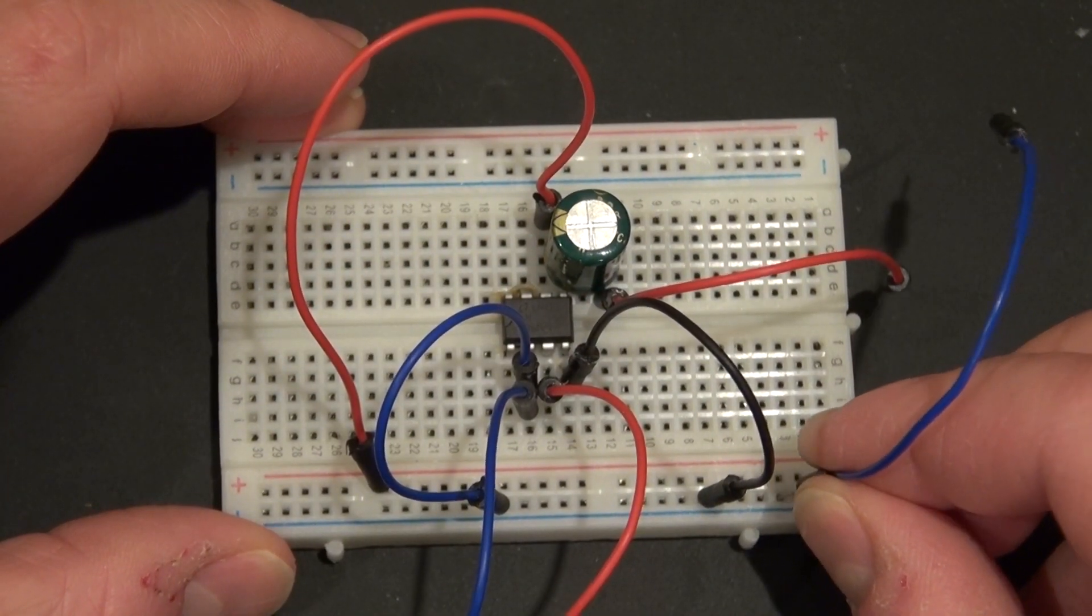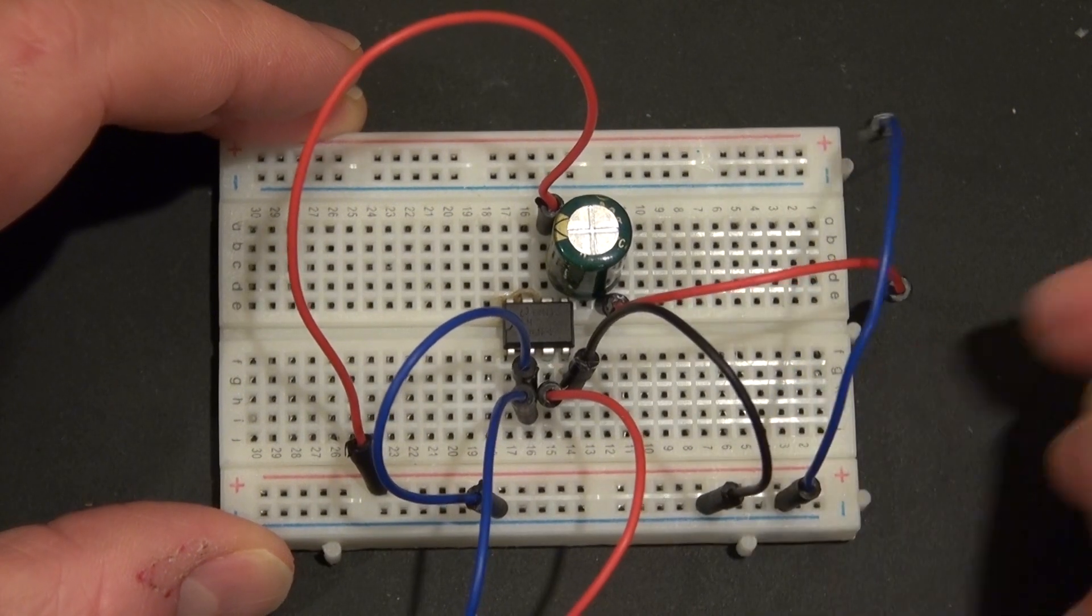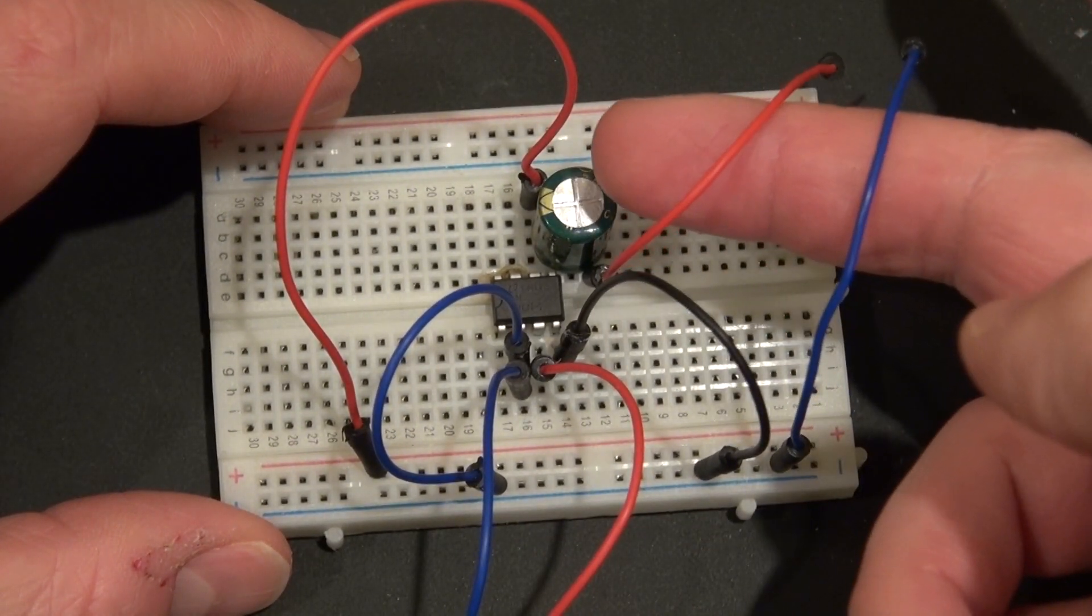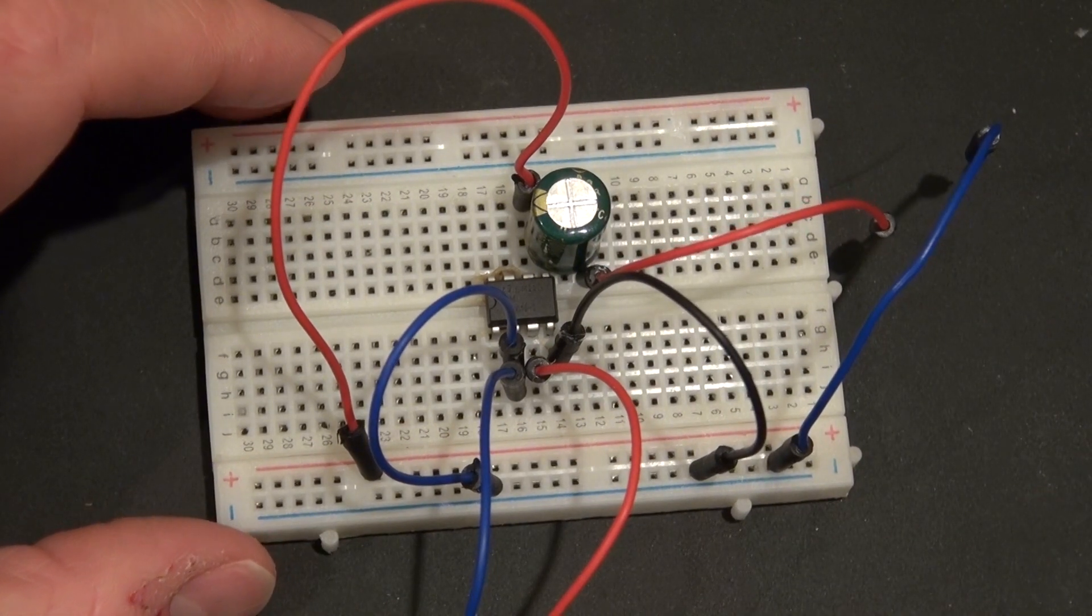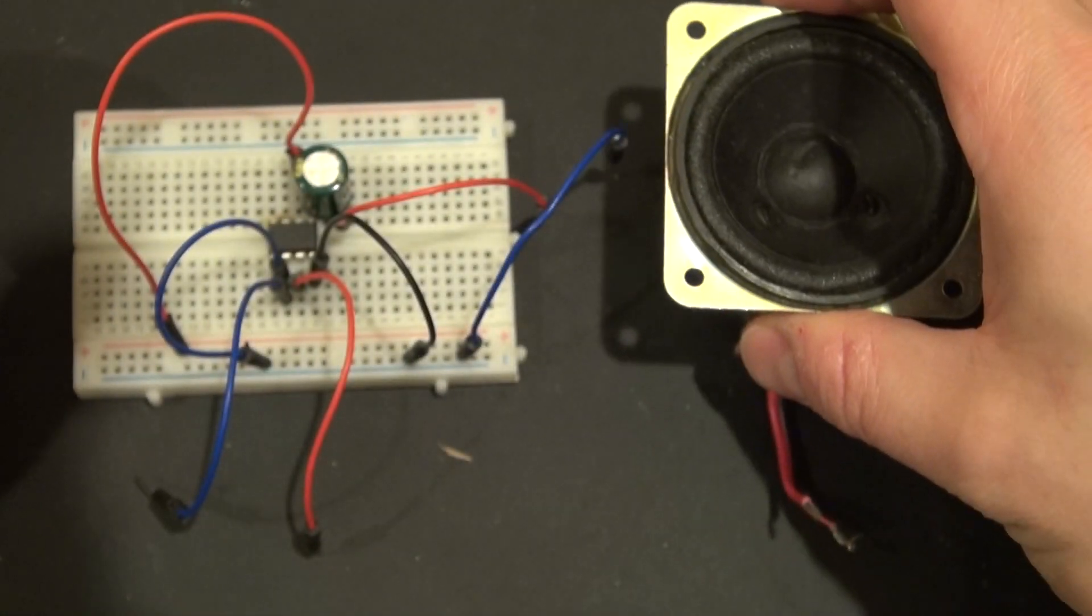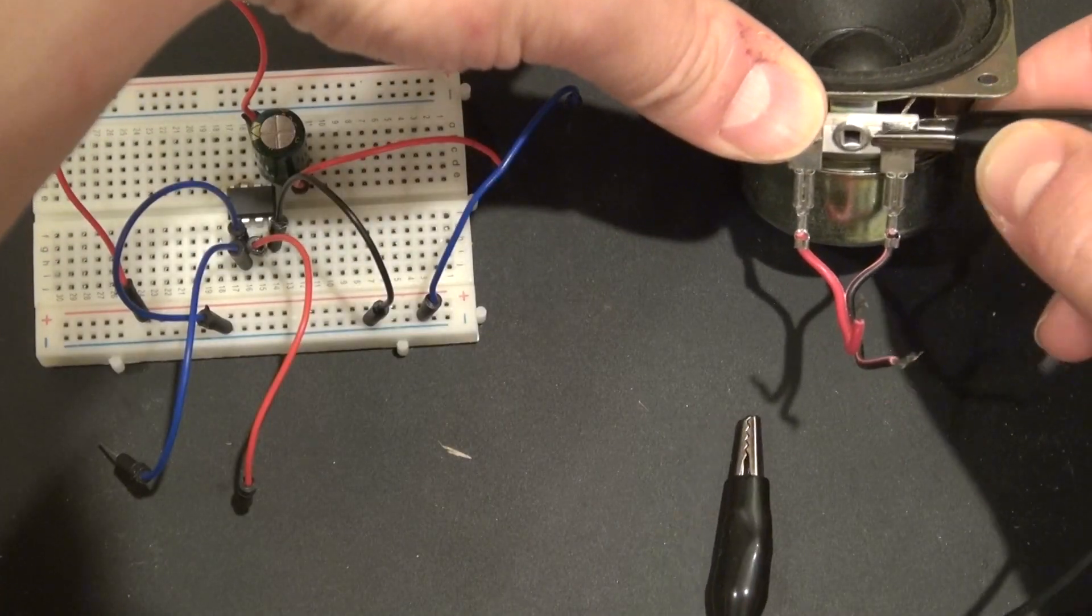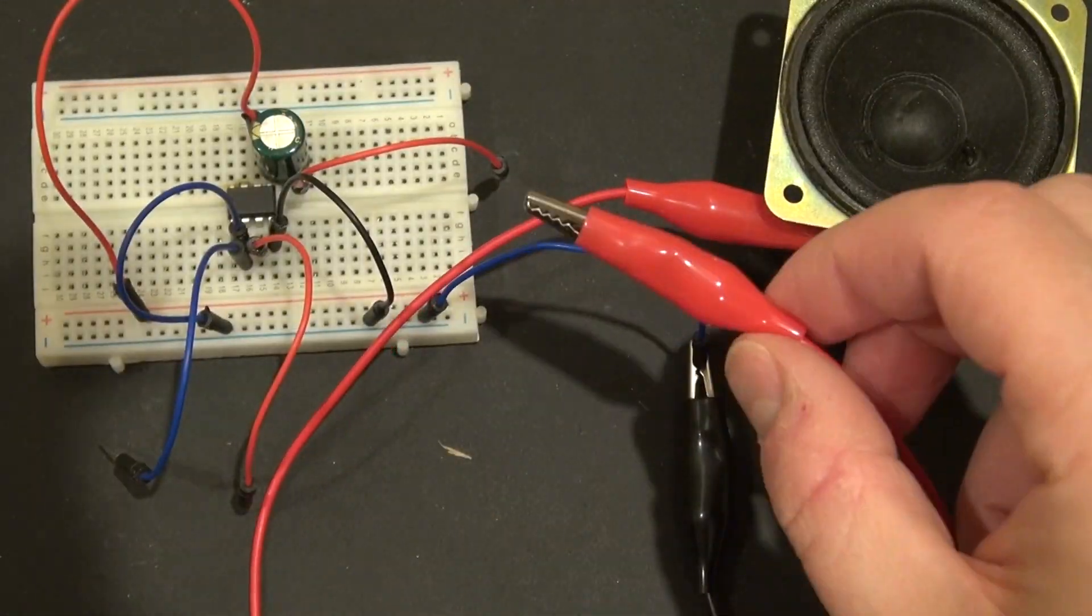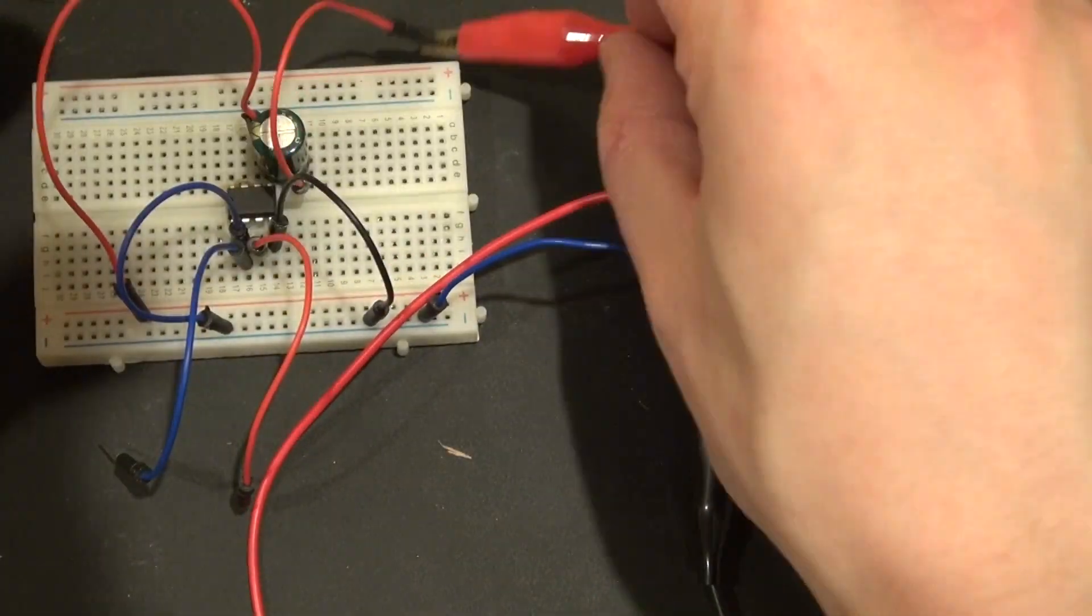And I have another jumper cable. I'm going to connect that to ground and leave that wire loose. These two wires will be connecting to the speaker. I have right here a 6 ohm 2 watt speaker. Polarity doesn't really matter, but I'm connecting negative to negative, positive to positive.